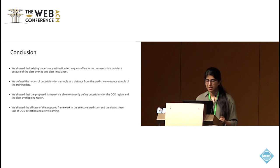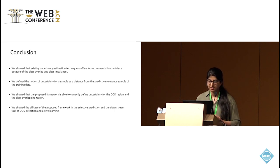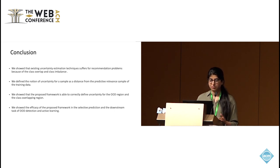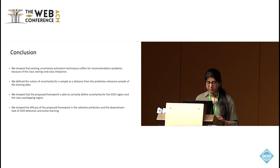In conclusion, we show that existing uncertainty estimation techniques suffer for recommendation system problems because of class overlap and class imbalance. We define uncertainty for a sample as its distance from the predicted relevant samples of the training data, and show that the proposed PRU framework correctly defines uncertainty for both OOD regions and class-overlapping regions. Finally, we demonstrate the efficacy of PRU in selective prediction and the downstream tasks of OOD detection and active learning. Thank you.